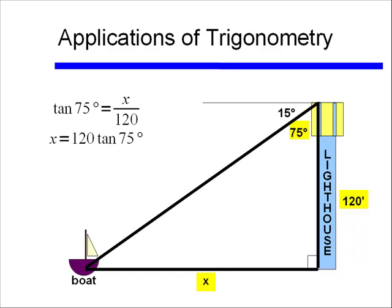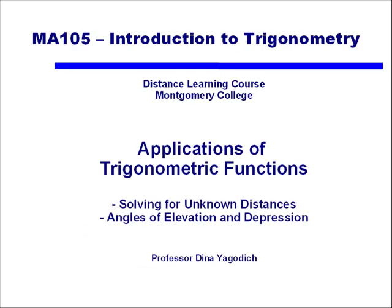Again, plugging that into our calculator, we get that the distance of the boat from the bottom of the lighthouse being 448 feet. And now we've shown some actual real-life applications of trigonometric functions, where we've had unknown distances, and where we're dealing with angles of elevation and angles of depression.